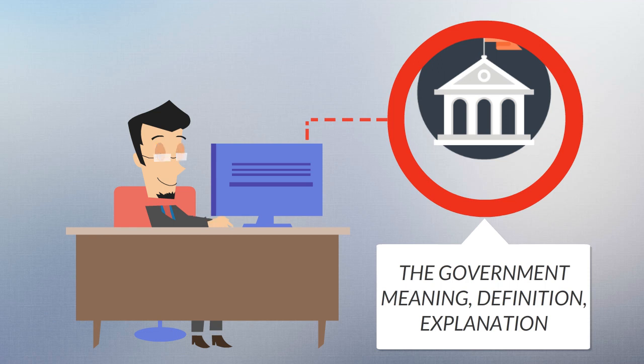While all types of organizations have governance, the word government is often used more specifically to refer to the approximately 200 independent national governments on earth, as well as subsidiary organizations.